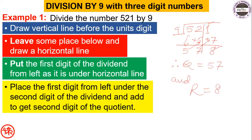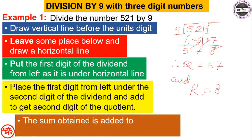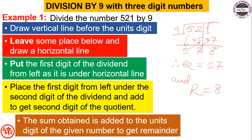Put the first digit of the dividend — 5 — under the horizontal line as it is. Add this 5 to the next digit: 2 plus 5 is 7. Then add this 7 to the next digit: 1 plus 7 is 8. Since 8 is smaller than 9, it is the remainder. Therefore quotient equals 57 and remainder equals 8.